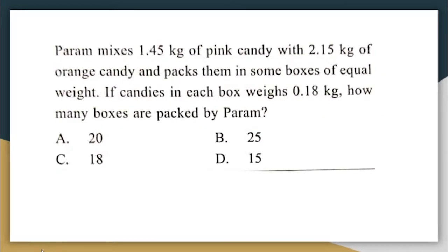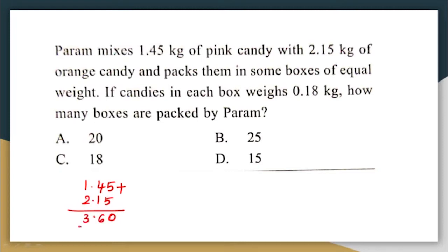Next question: Param mixes 1.45 kg of pink candy with 2.15 kg of orange candy and packs them in boxes of equal weight. Each box weighs 0.18 kg. The total weight of candy Param has is 1.45 plus 2.15, which equals 3.60 kg.